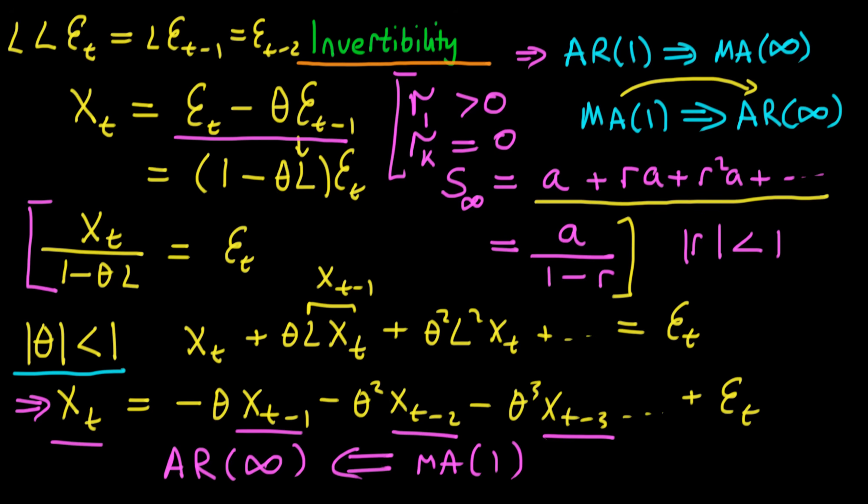But these two things are equivalent and they're equivalent under the assumption that we can actually invert the process. So assuming that the modulus of theta is less than one then we can equate a moving average of order one process with an AR process which is infinite.